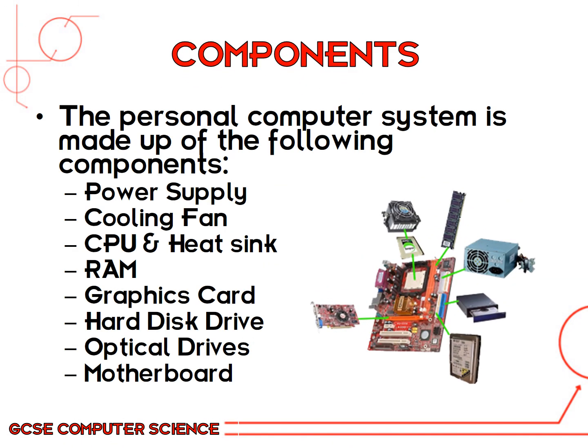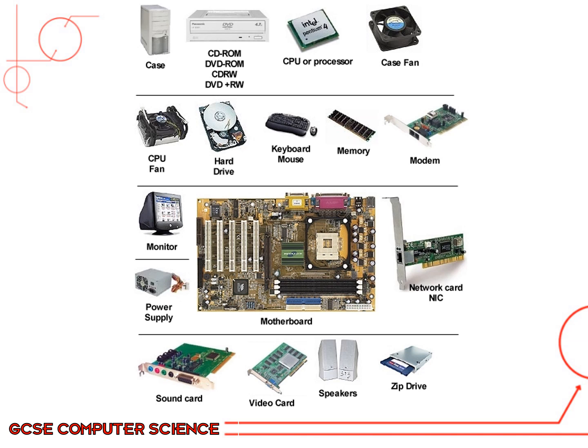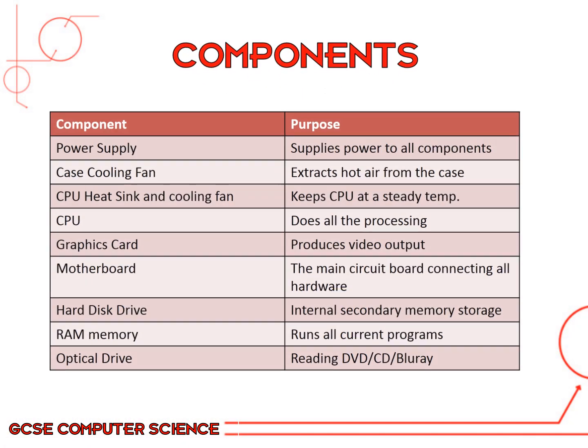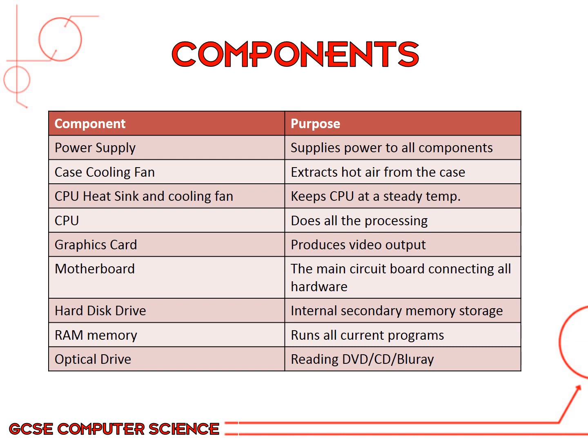A personal computer, which is what you use in school and offices, is made up of a load of different components. The components you need to know for this course are the power supply, the cooling fan, the CPU and the heatsink, RAM, graphics card, hard disk drive, optical drives and a motherboard. If you take a moment to look at all of the different components in these pictures shown here, it'll help you understand what is inside the computer system. There are also input and output devices shown here as well, like a keyboard and mouse, a monitor, speakers and so on, but all of the internal components are shown as well.